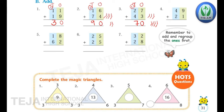4th question: 49 plus 21. Write the place values. The digits in the 1's place are 9 plus 1 — after 9 the next number is 10, so carry 1 in the 10's place and write 0 in the 1's place. Now add the digits in the 10's place: 1, 4, 2. 1 plus 4 — after 4 is 5. Then 5 plus 2 — keep 5 in mind, count 2 more: 6, 7. So the answer is 70. 49 plus 21 is 70.